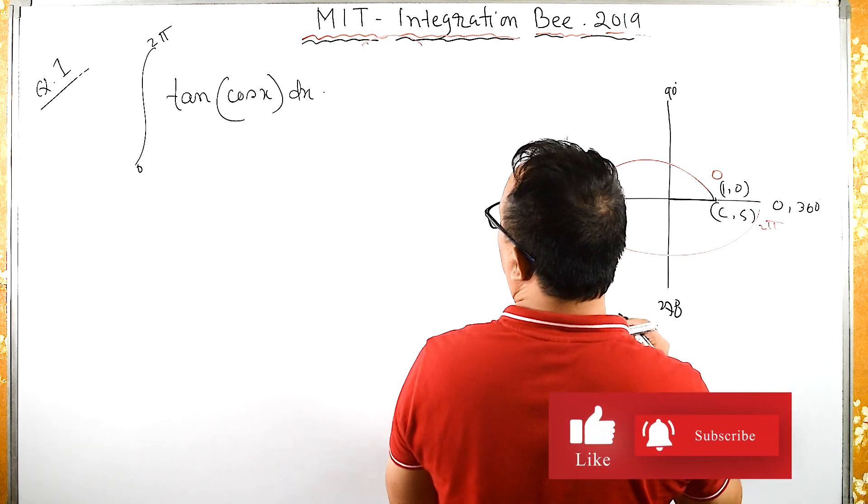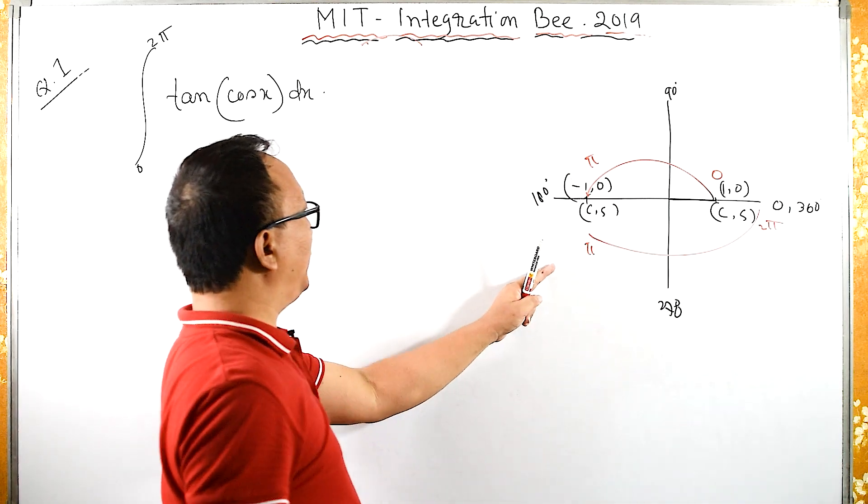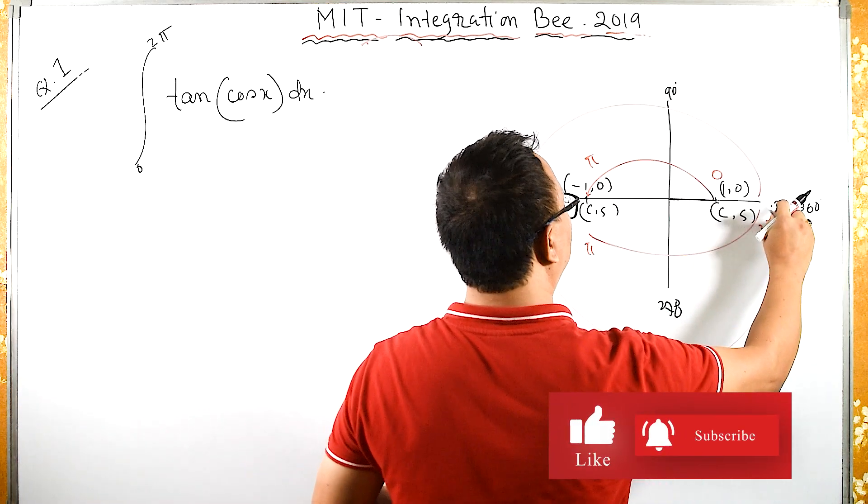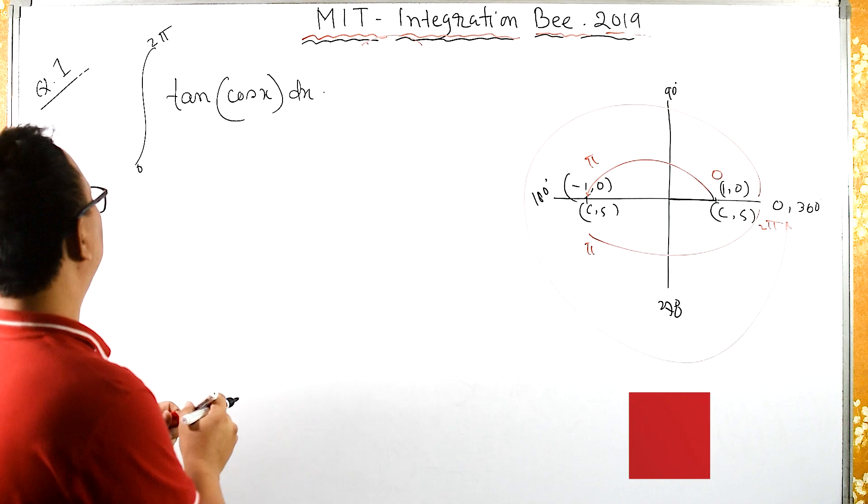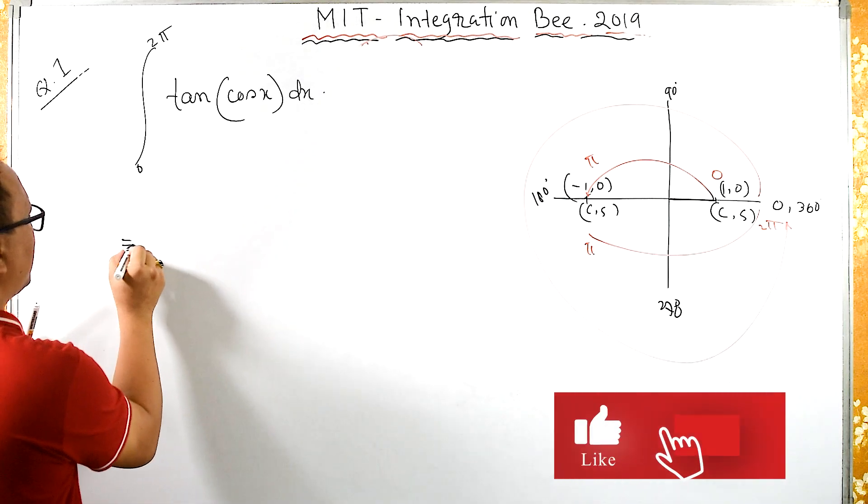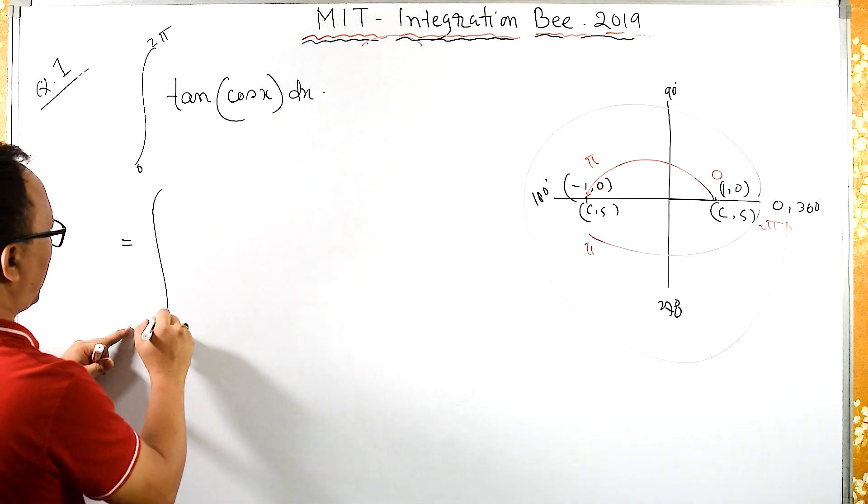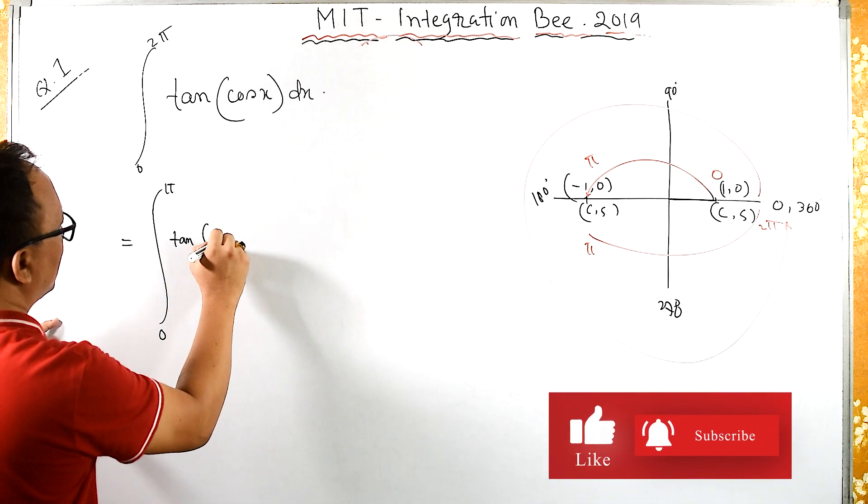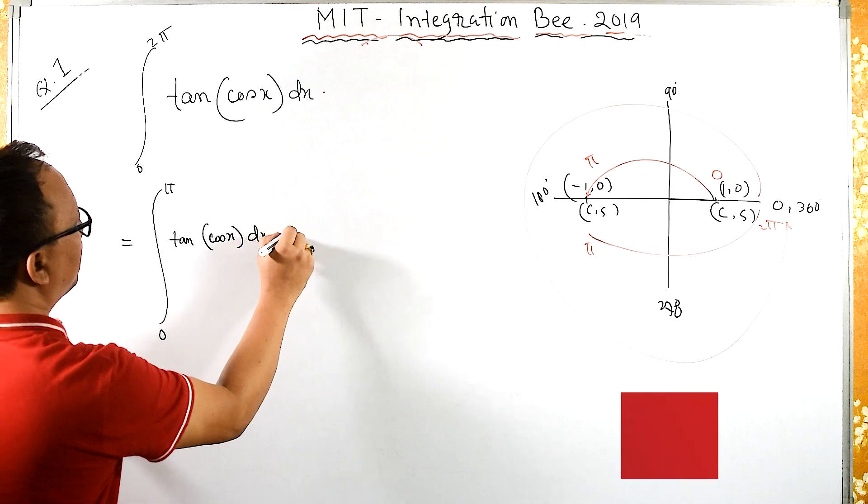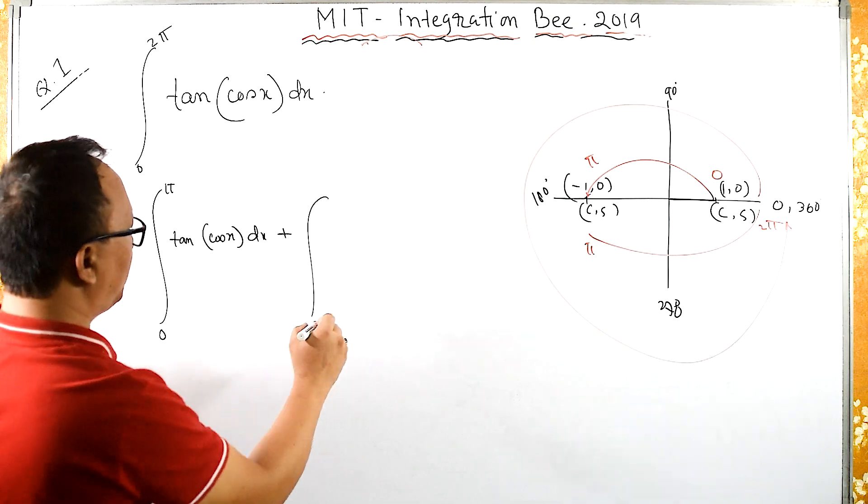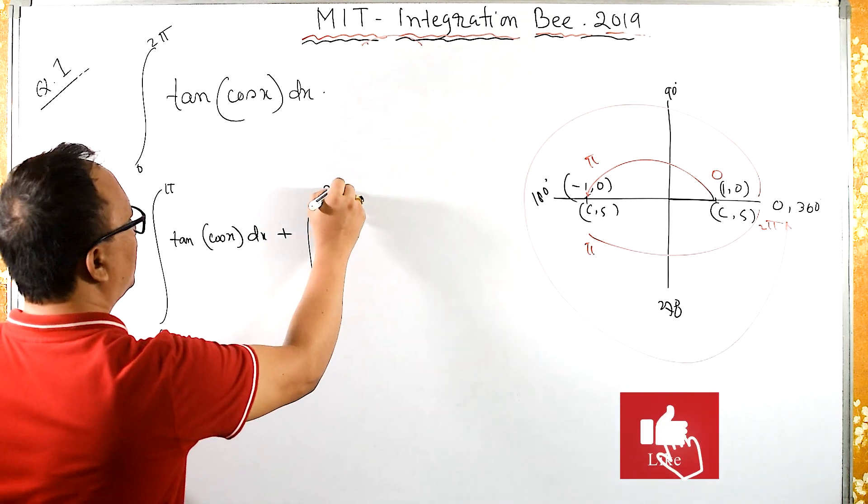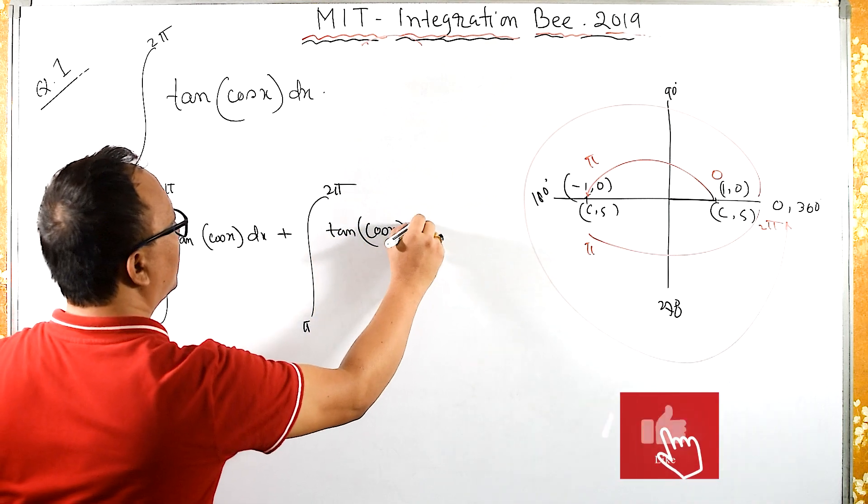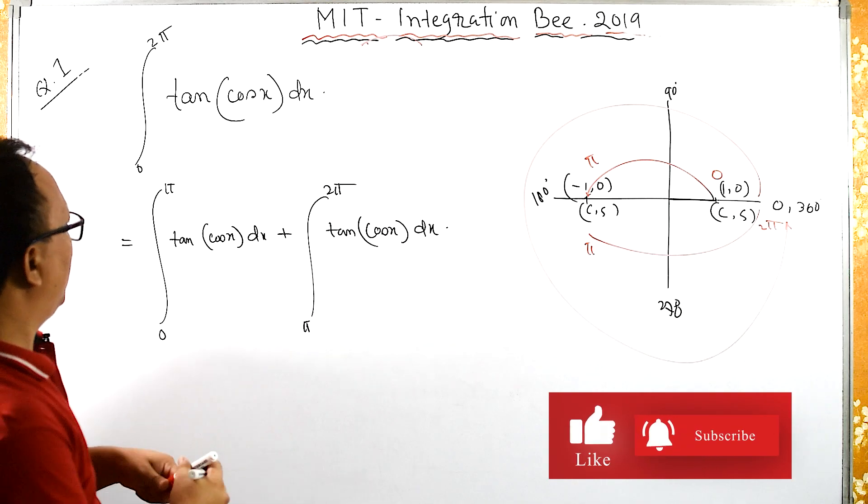What I am going to do is, instead of 0 to 2π, I will break it like this. So this equals: integral from 0 to π of tan(cos x) dx plus integral from π to 2π of tan(cos x) dx.